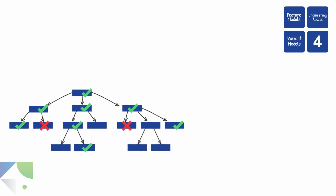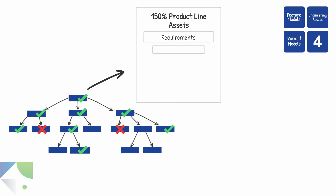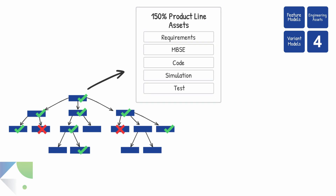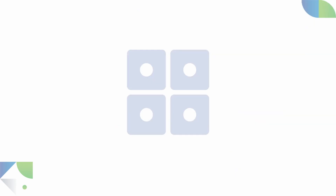In the fourth and final step, the variant model is used to transform the 150% product line assets to 100% variant assets. All assets of all engineering tools can be transformed in one go.